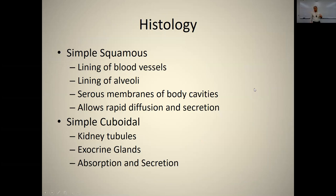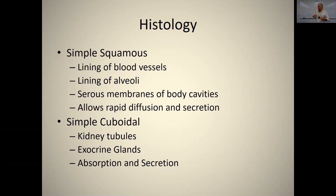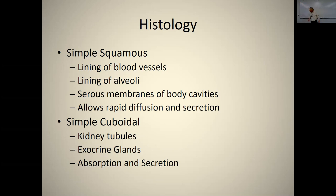You need to know the names of these epithelia and where you might find them. Simple squamous epithelium lines blood vessels, lines the alveoli in your lungs, and forms the serous membranes of body cavities. These serous membranes secrete a watery fluid that allows organs to move in those body cavities without adhering to each other, and they allow rapid diffusion and secretion.